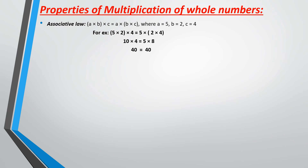Associative law of multiplication: when 3 or more numbers are multiplied, their product is the same regardless of how they are grouped. Here it is grouped in one way and then in a different way. Regardless of how it is grouped, when you multiply all of them, your answer on the left-hand side and the right-hand side is going to be equal.